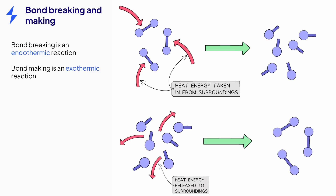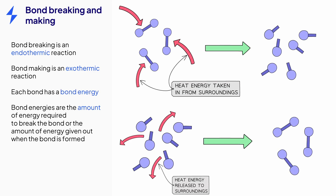Chemical bonds have a specific bond energy associated with them. A bond energy is the amount of energy needed to break the bond, or the amount of energy given out when a bond is formed. Bond energies can be used to determine the enthalpy change for a reaction, which is the change in heat energy.